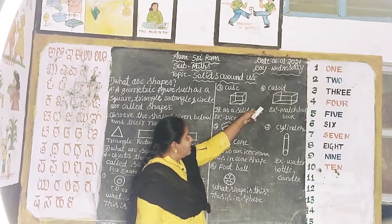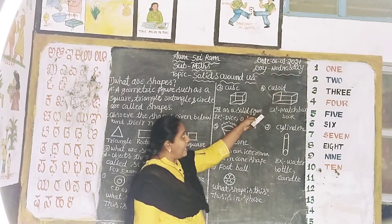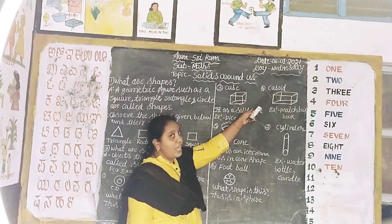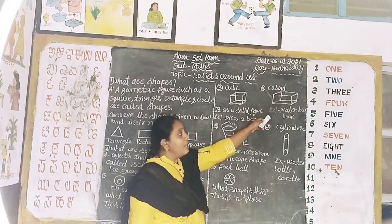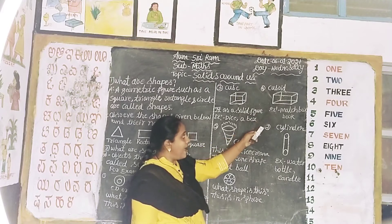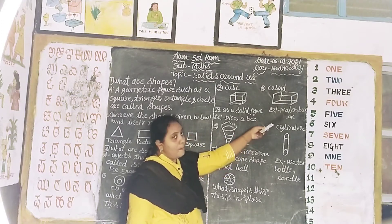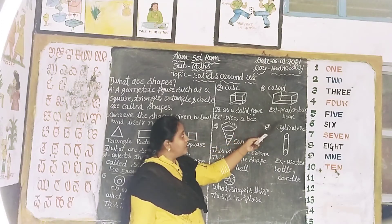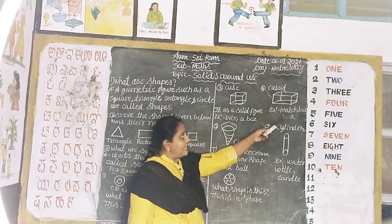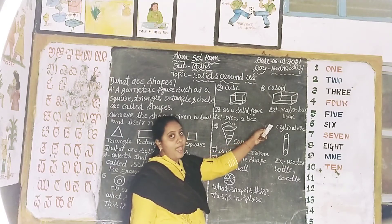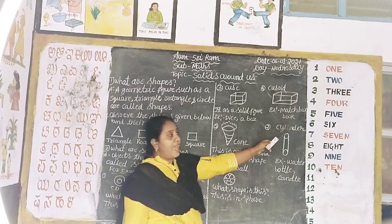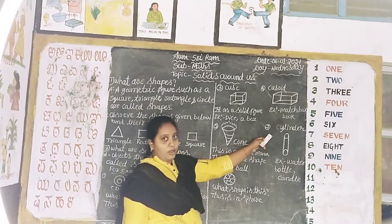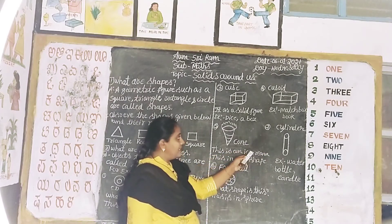C-U-B-O-I-D. Cuboid. Example: matchbox, book. Box. Book.